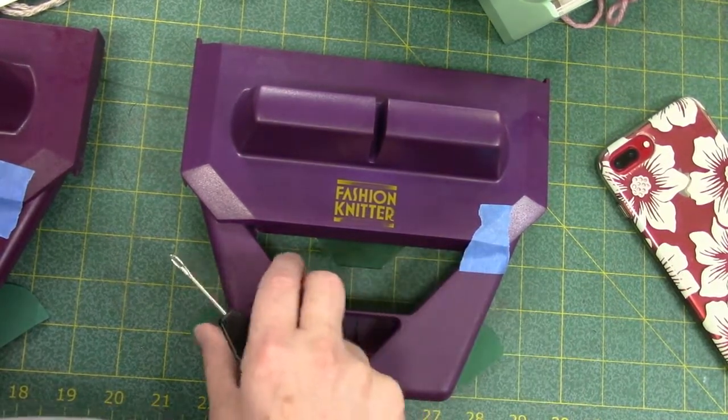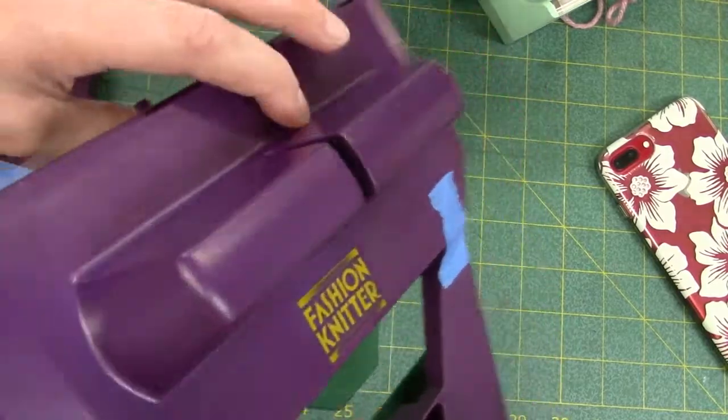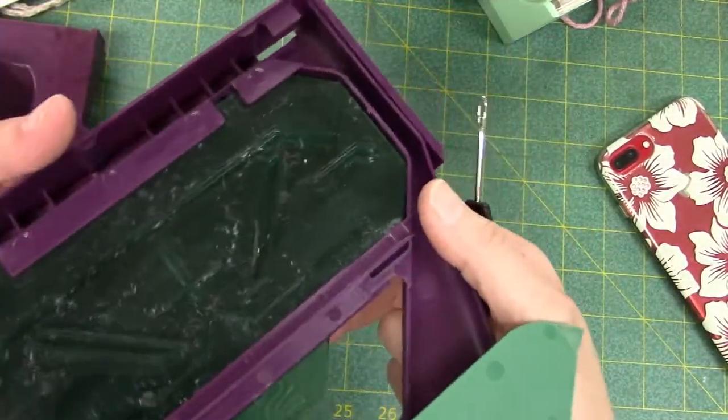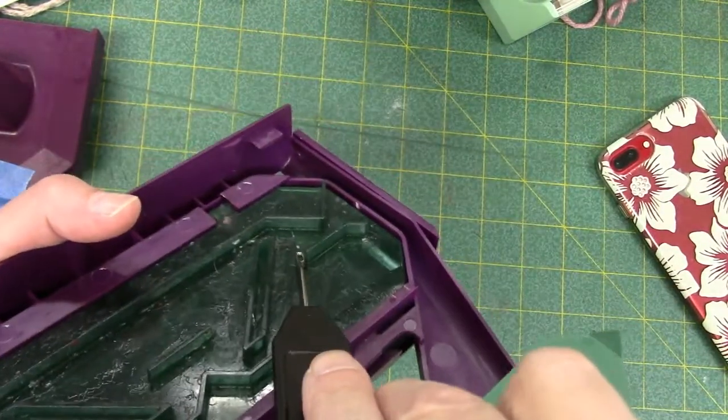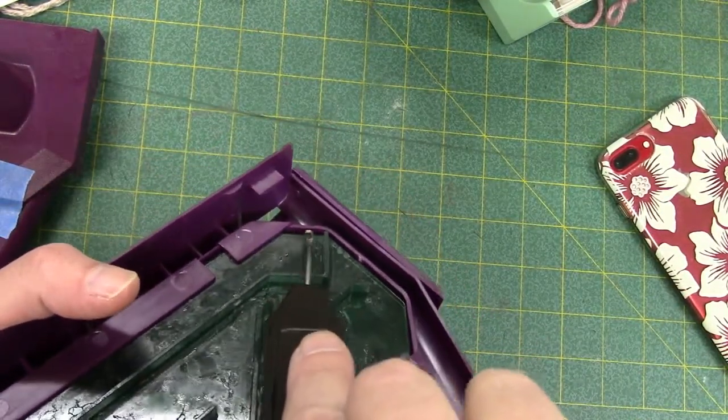I've got the lid taped down so I can turn it over. I've got a key plate installed, and you can see that with the key plate in, there's barely any lip.